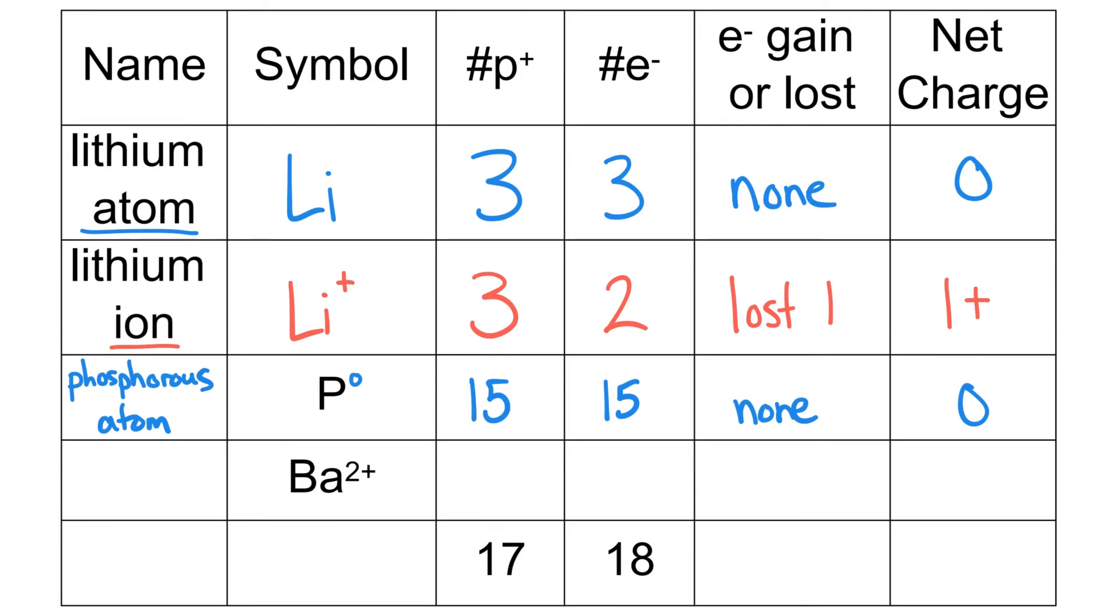In the fourth row, we're looking at Ba2+. That is barium, and we know it's an ion because there's a 2+ charge. I always like to start out by identifying the number of protons, which we know from the atomic number, which is 56 in this case.